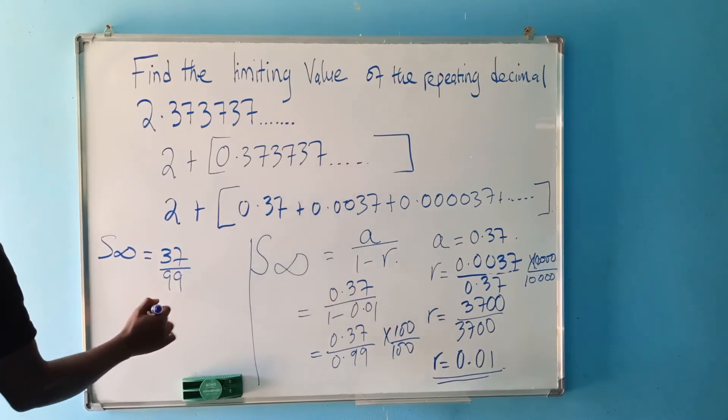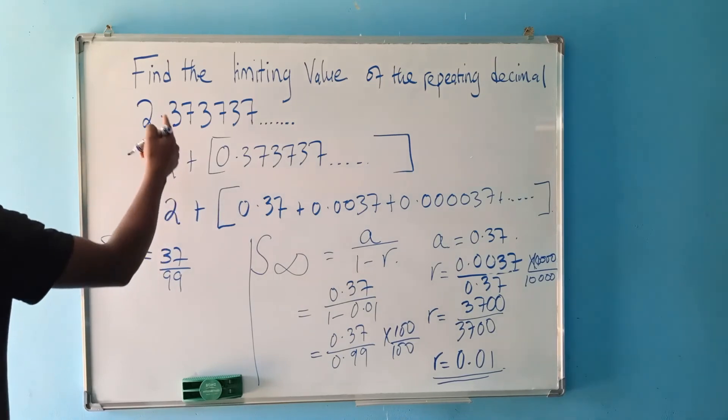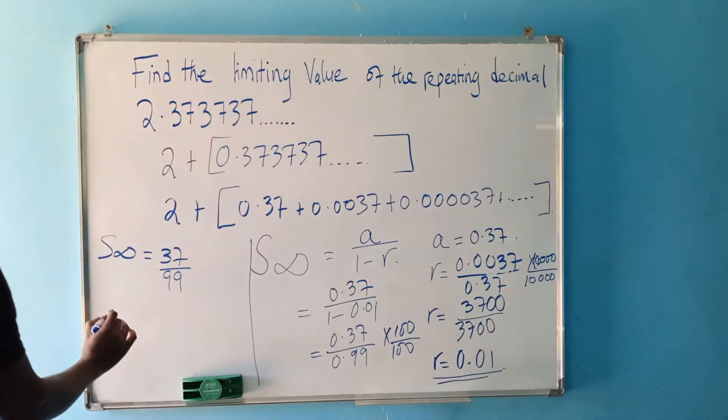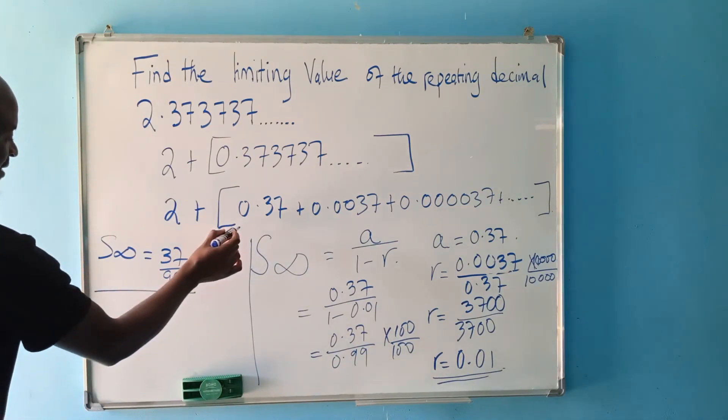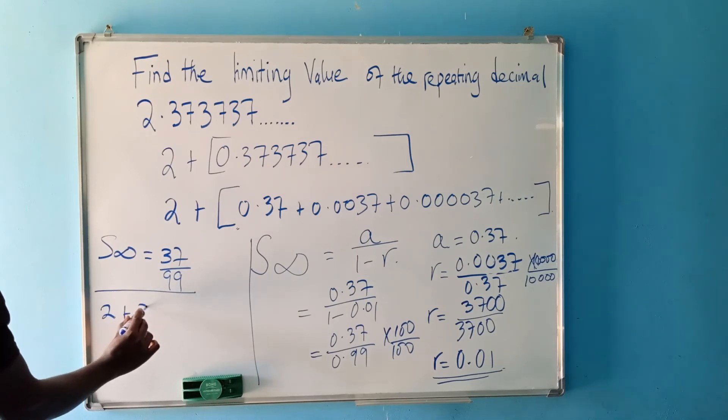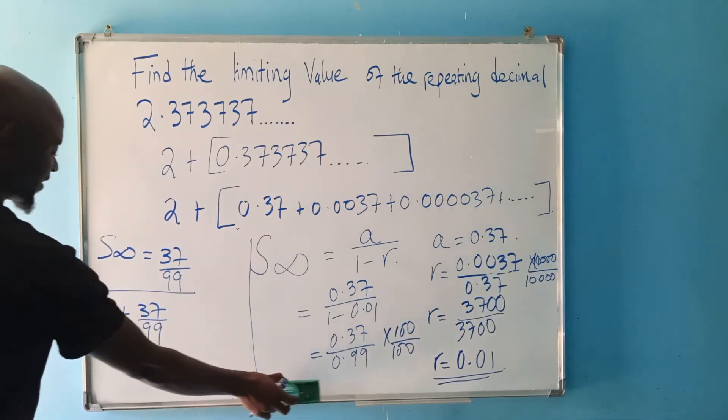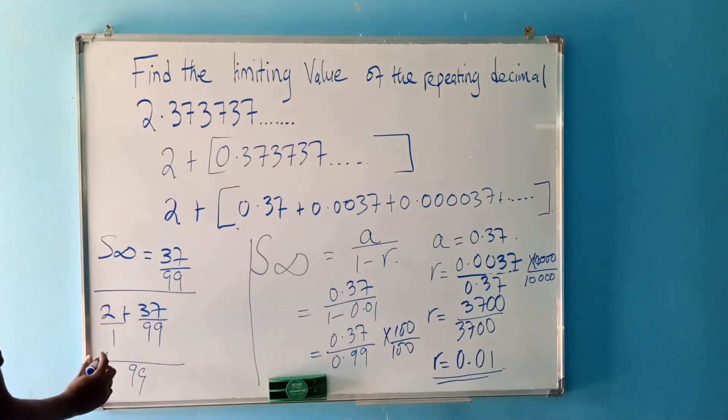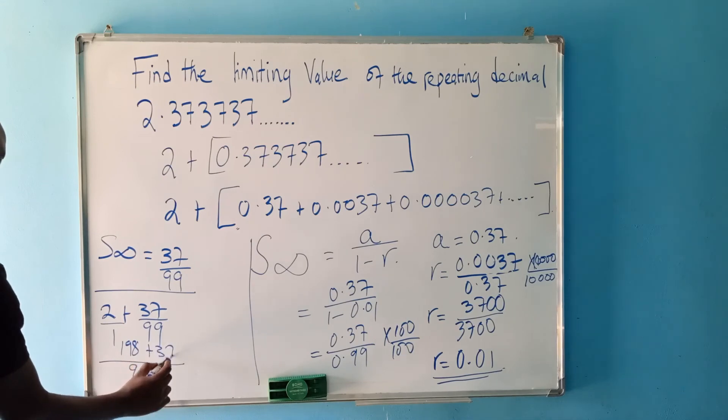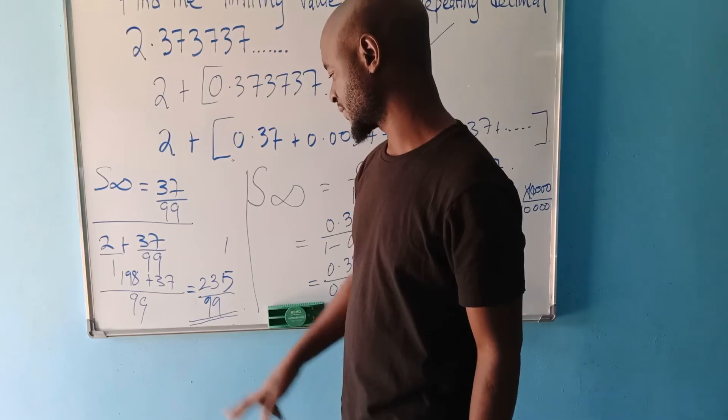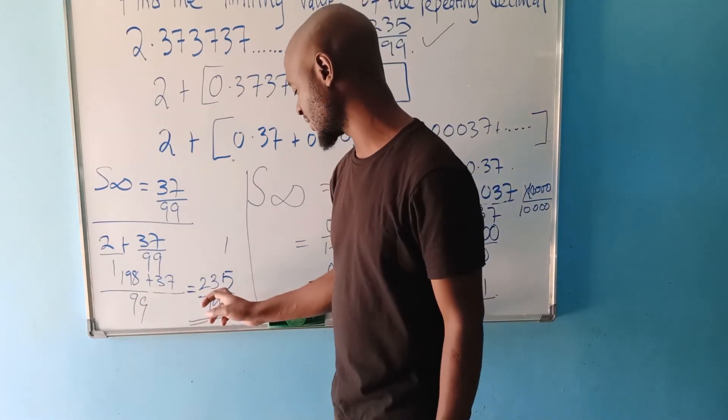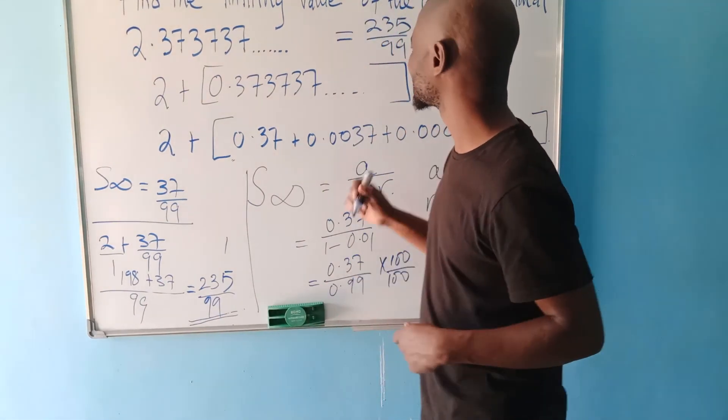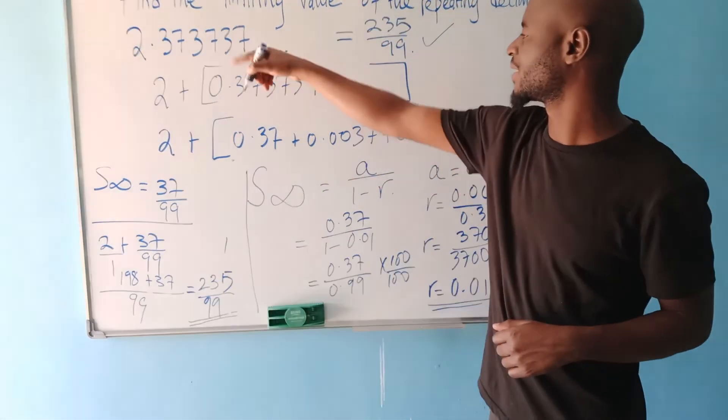So once we add this to 2, what we are going to have will be the limiting value for this repeating decimal. So now, this is the sum to infinity for this. We need now to add the 2. So it will be 2 plus 37 over 99. So this is over 1. We can look for a common denominator. The common denominator here will be 99. 99 multiplied by 2, we get 198 plus 37. And this will be equal to, so when we add this, we end up with 235 over 99. And this will be the limiting value for this particular repeating decimal here.